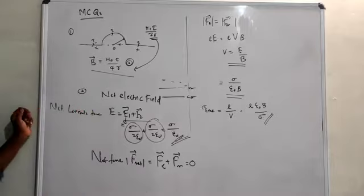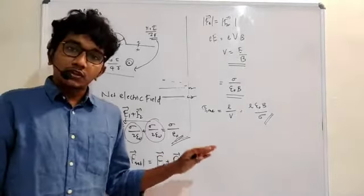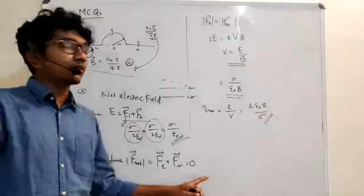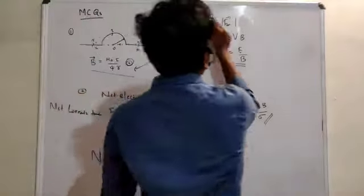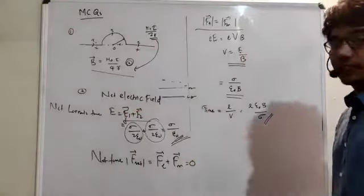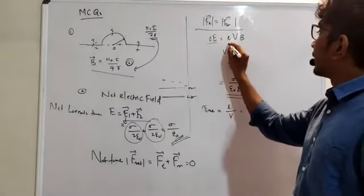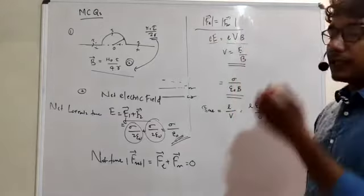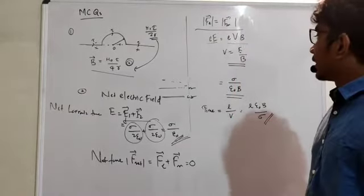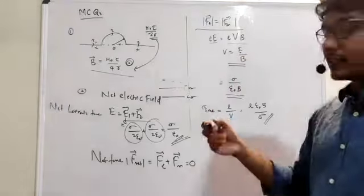The net Lorentz force on the electron equals the electric force plus the magnetic force, and this net force equals zero. Therefore, the electric force fE equals the magnetic force fB in magnitude. This gives us: qE = qvB, so E = vB.